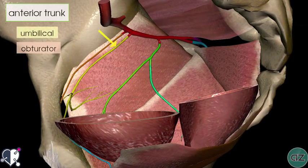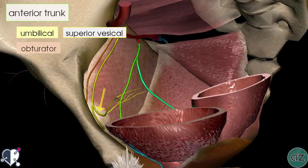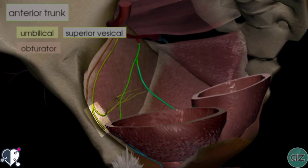Next is the umbilical artery. In fetal life, this was the artery carrying deoxygenated blood from the fetus to the placenta via the umbilical cord. It gives off the superior vesicle artery, which has numerous branches supplying the bladder, the ureter, and in men the seminal vesicles and vas deferens. Distal to that origin, the umbilical artery becomes obliterated — it is not patent, forming a fibrous remnant called the medial umbilical ligament, which attaches to the anterior abdominal wall.